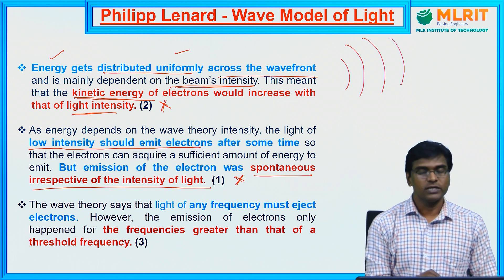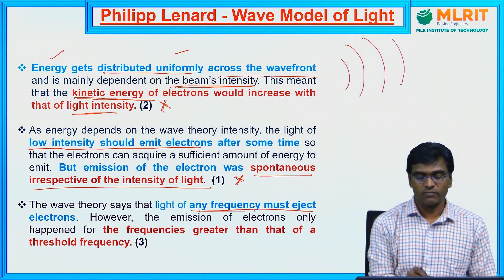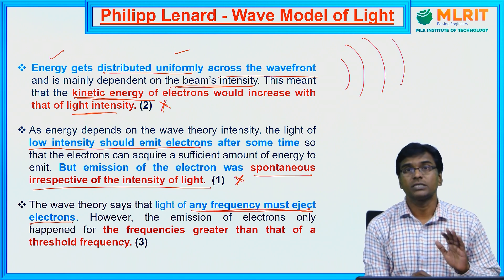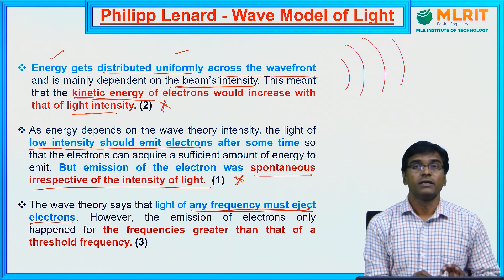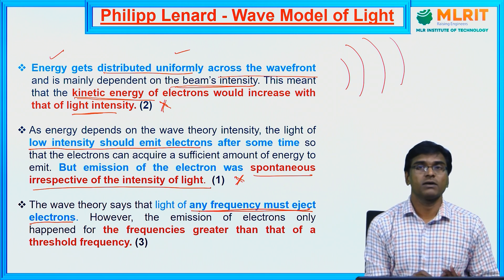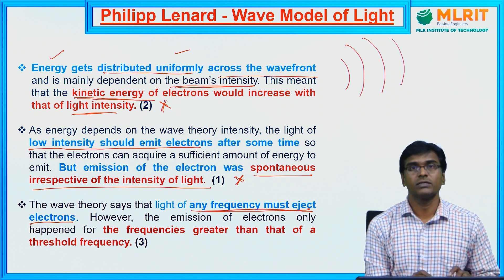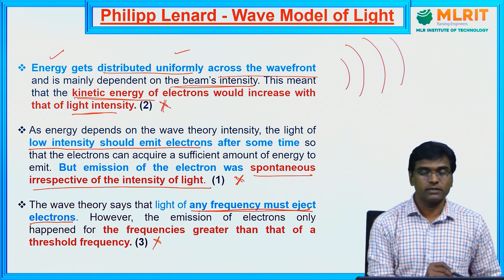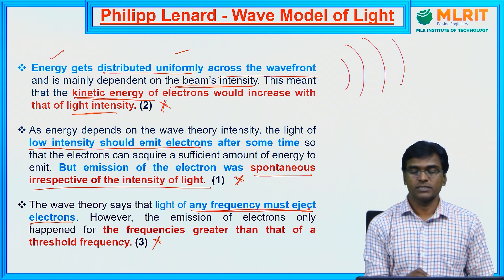In the third case, the classical wave model says that any frequency of light must eject electrons — there is no restriction on frequency. But in reality, the photoelectric effect shows that only a suitable frequency of light will cause electron ejection. Frequencies below the cutoff do not show the photoelectric effect, which contradicts the classical wave theory.